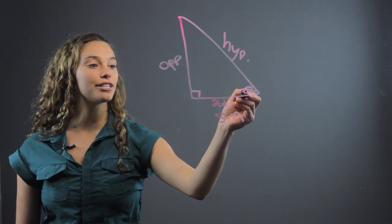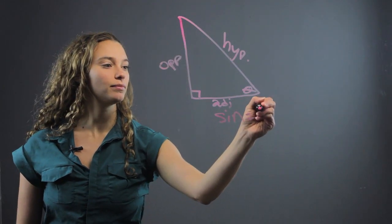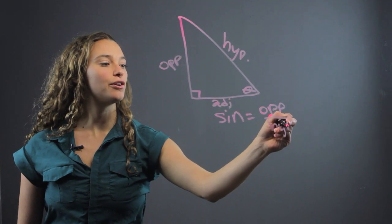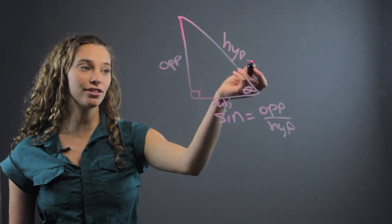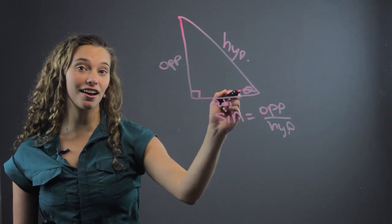So sine is going to be the opposite side over the hypotenuse. So you take the opposite side and divide it by the hypotenuse and that will give you the measure of this angle. That's the sine of this angle.